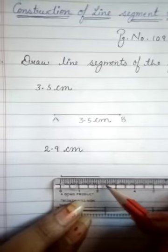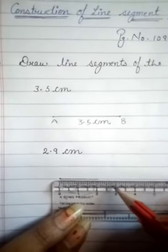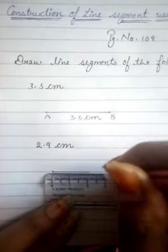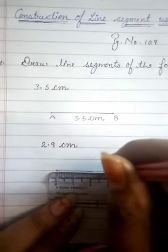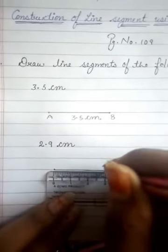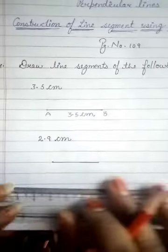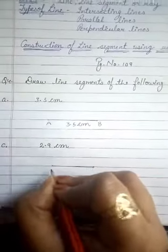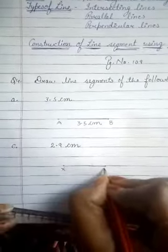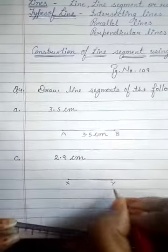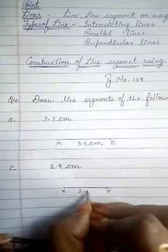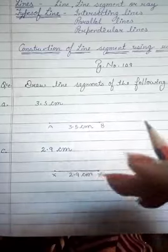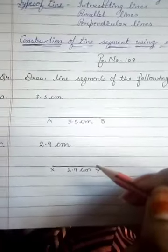1, 2, 3, 4, 5, 6, 7, 8, 9 — it is here. So we will mark over here. This is 2.9. We will put a point here, label it as X and this as Y. The length is 2.9 centimetres. This is how you draw line segments.